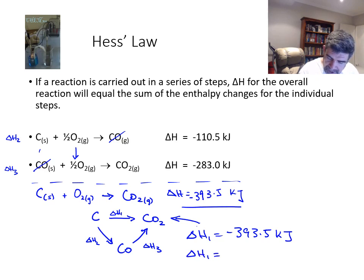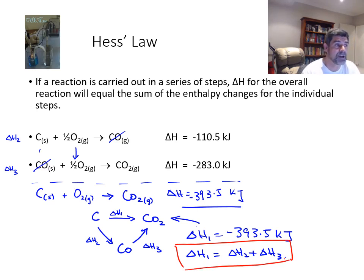Mathematically, delta H1 is just equal to delta H2 plus delta H3. And this, of course, is the key to Hess's law. Hess said that if you have a chemical reaction with a number of steps, if you add the enthalpies for each of those steps together, you will end up with the same value as if you carried out the reaction in a single step.